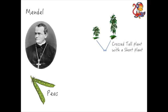He crossed a tall plant with a short plant. First of all, he made sure that the short plant and tall plant that he was using only ever produced short plants or tall plants respectively. So he called them pure—pure tall or pure short.